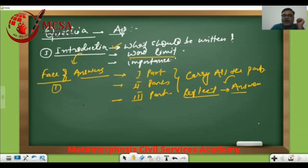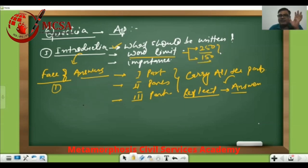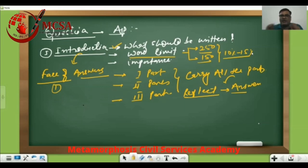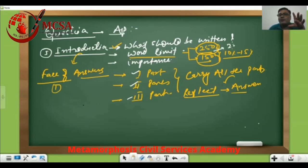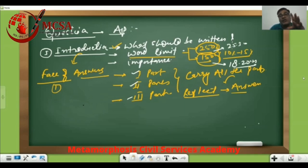Point number two: what should be the word limit? Two types of questions are mainly asked nowadays — one is 250 words and the other is 150 words. Simply take a lump sum 10 percent, maximum 15 percent if you want to increase. So for a 150-word question, the introduction becomes around 15 words, and for a 250-word question, around 25 words. If the question has multiple parts, you can go up to 25 to 30 words, or 18 to 22 words respectively, but not more than this.